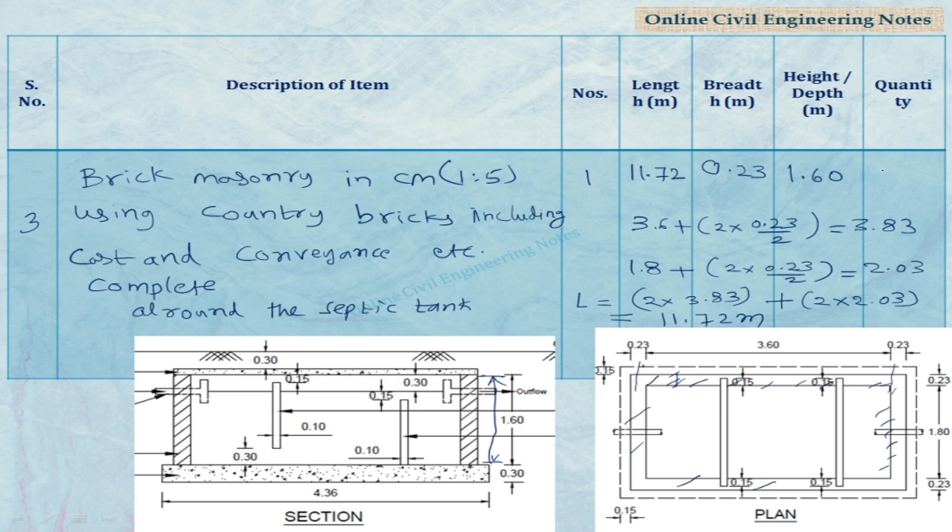Now find the quantity number into length into width or breadth into height which is equal to 1 into 11.72 into 0.23 into 1.6. It comes to 4.312 cubic meter.